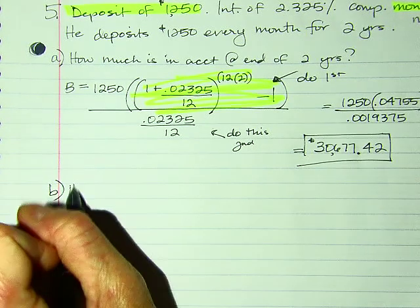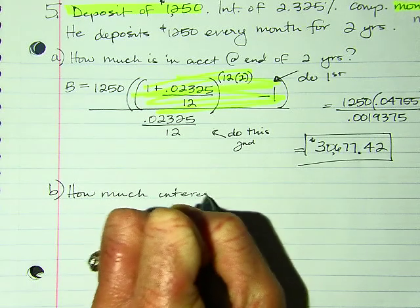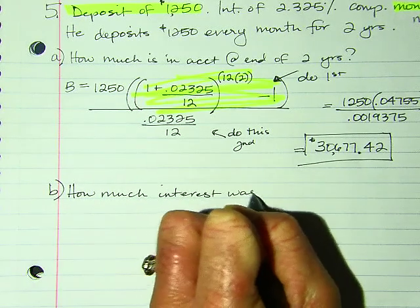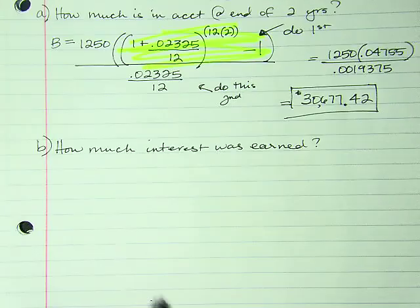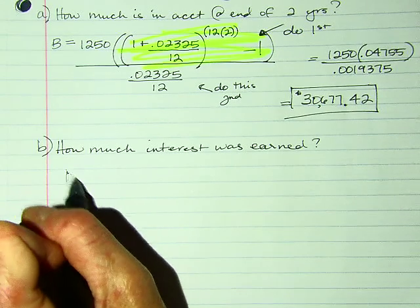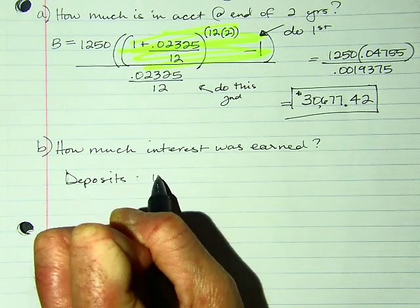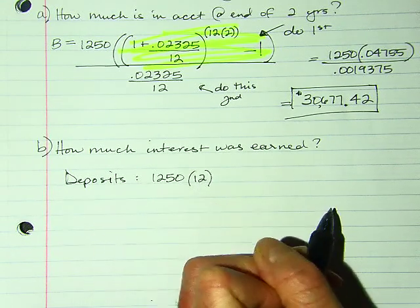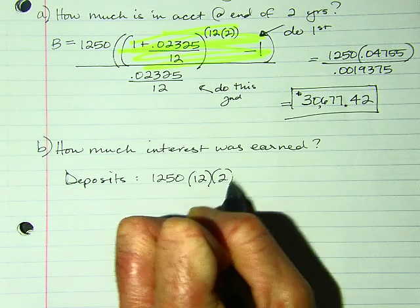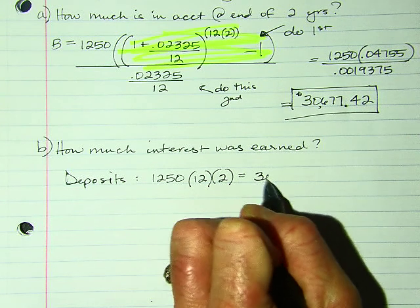Part B: how much interest did she earn? First, figure out the total deposits. She deposited $12.50 each month — wait, actually $1,250 each month. So $1,250 × 12 × 2 = she deposited $30,000 total.